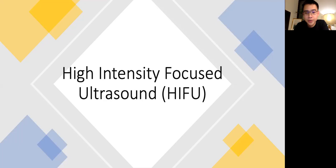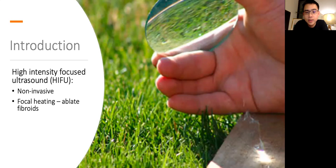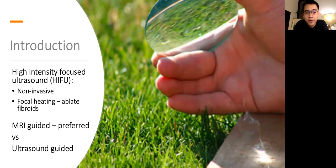Moving on to high-intensity focused ultrasound, or HIFU for short. HIFU is a non-invasive treatment modality for ablation of uterine fibroids. These high-intensity focused ultrasound beams induce focal heating within the patient's body and gradually ablate the fibroid over time. HIFU can be performed under MRI guidance or ultrasound guidance. MRI is preferred as it provides the greatest real-time accuracy for ablation, and is also able to measure temperature during ablation to give an accurate idea of how much heating has been applied.